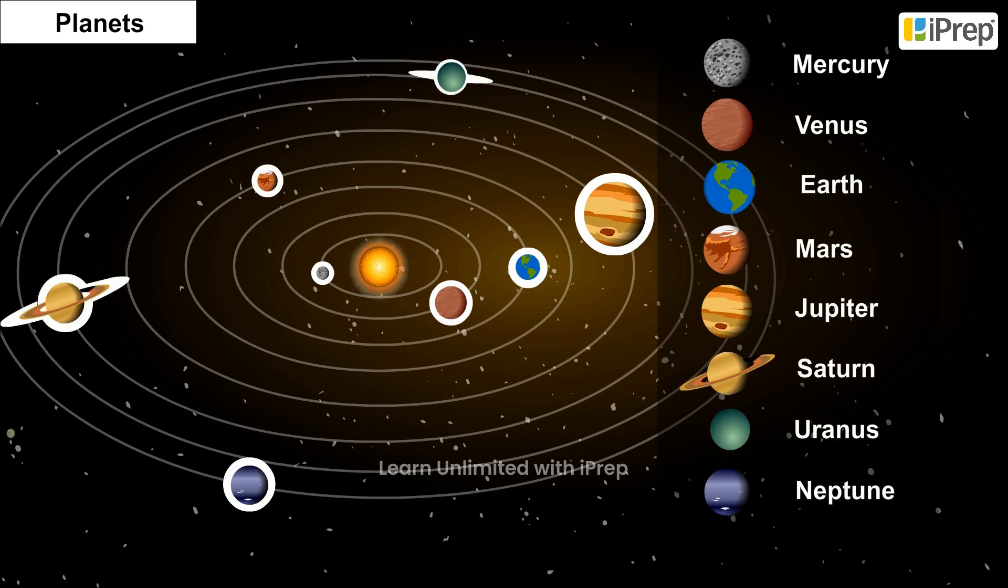All the 8 planets of the solar system move around the Sun in fixed paths called orbits.